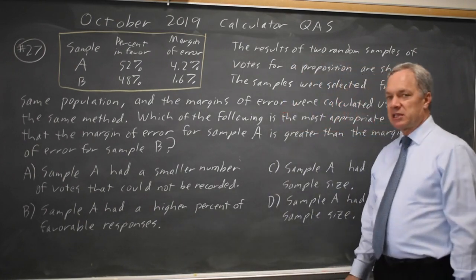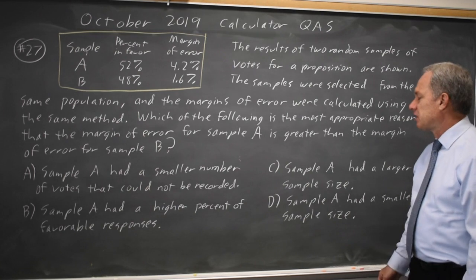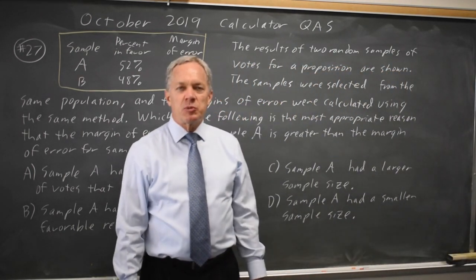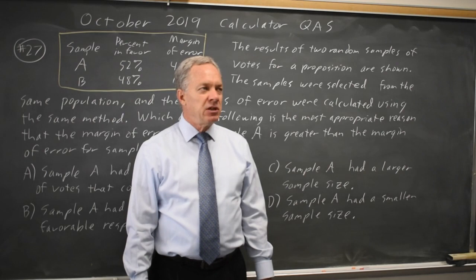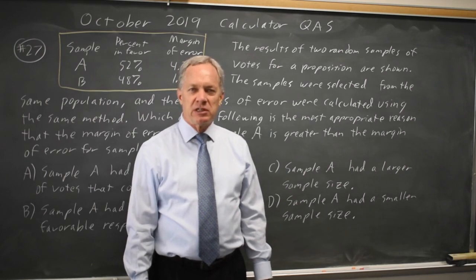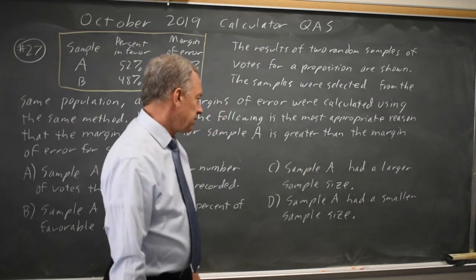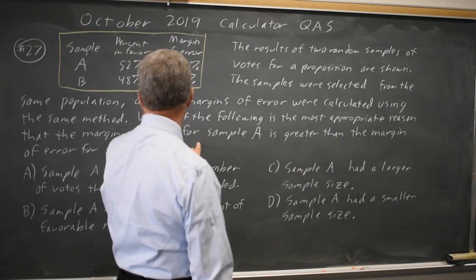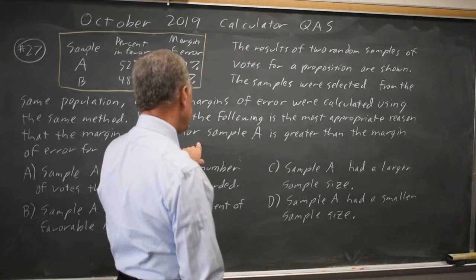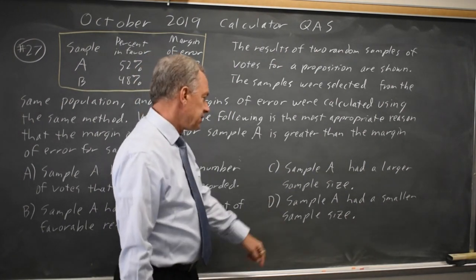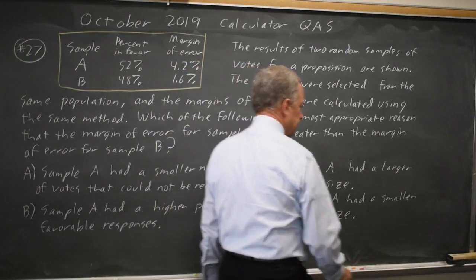Margin of error is very sensitive to sample size, and it should make sense that when you take a larger sample, your errors are likely to be smaller, which means your sample's margin of error for A is greater means that sample A has a smaller sample size. That would be choice D.